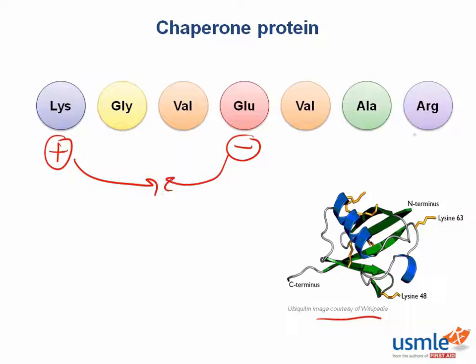But wait — the arginine at this end is also positively charged. So how does the glutamate know which one it should be attracted to? It's like a molecular love triangle. Ultimately, the protein will be happiest in a certain shape, but sometimes needs a little bit of help to get there.